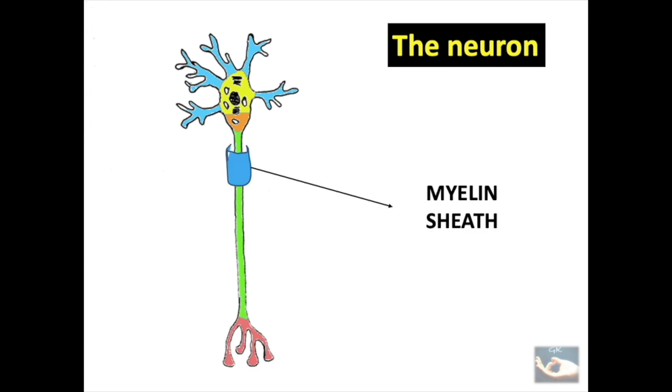The function of the axon is to transmit the neural signal or the neuro electrical signal that has been set up in the cell body. When this neural impulse is transmitted over a long distance, the time taken is more. To reduce the amount of time taken for this impulse to be passed, what is known as myelin sheath is present. This myelin sheath is not present in all the nerves. It is present only in specific nerves called the myelinated nerves.